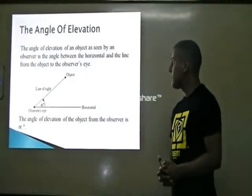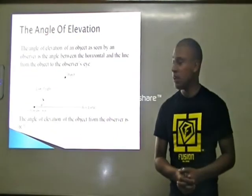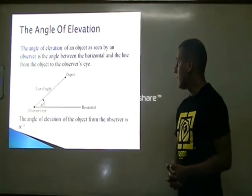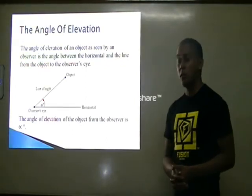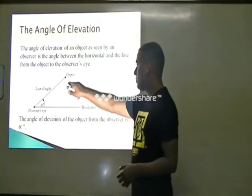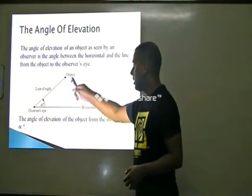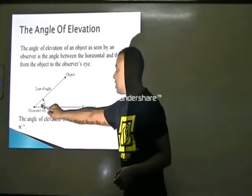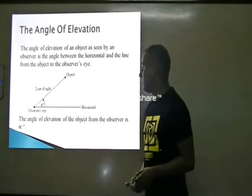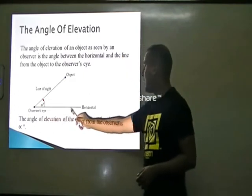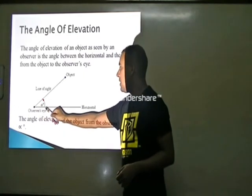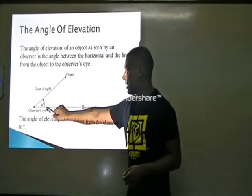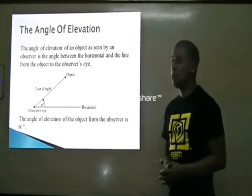Now we are going to have a look at the angle of elevation. The angle of elevation of an object, as seen by an observer, is the angle between the horizontal and the line from the object to the observer's eye. Suppose we have an object and an observer — the line of sight connects the object to the observer's eye, and the angle this line makes with the horizontal from the observer's eye is known as the angle of elevation.